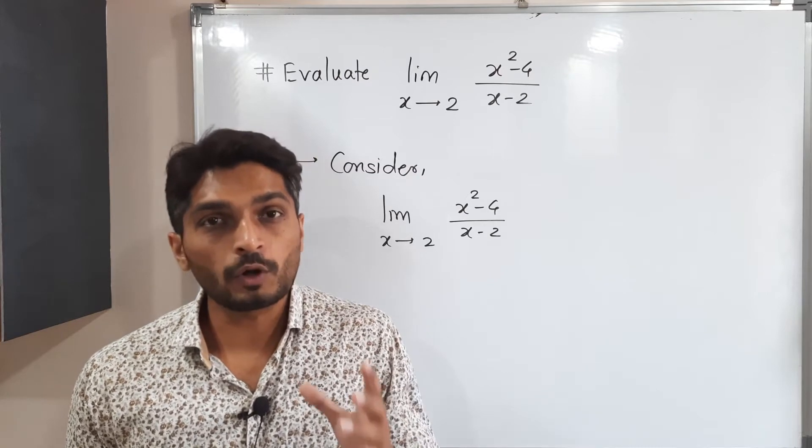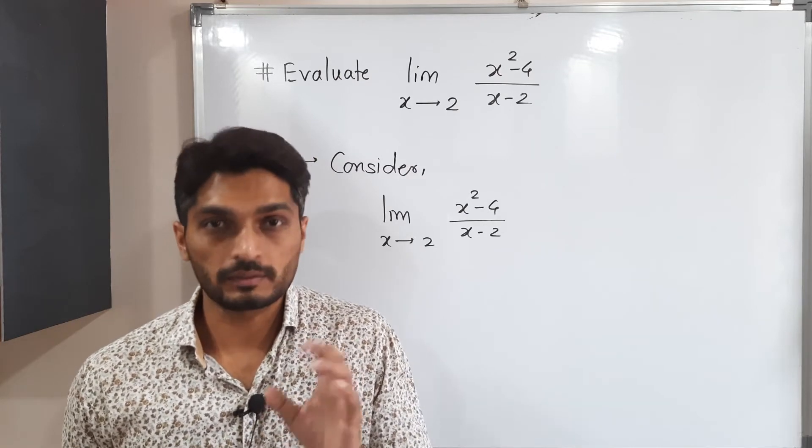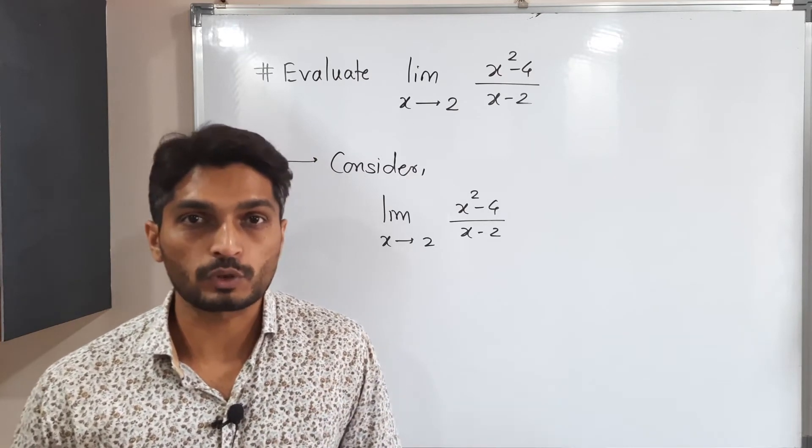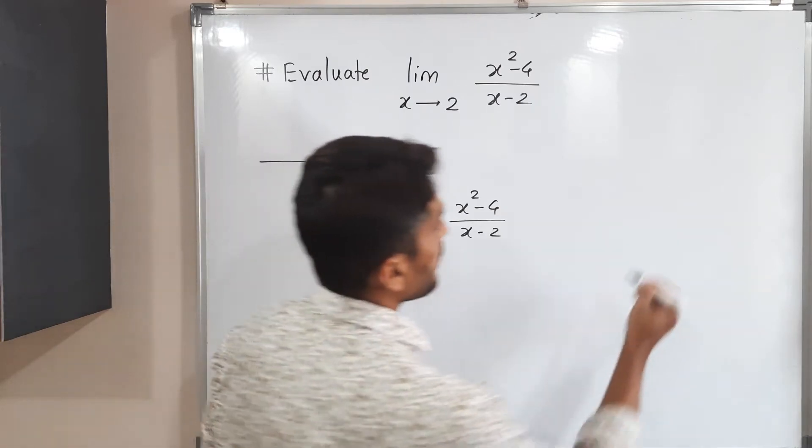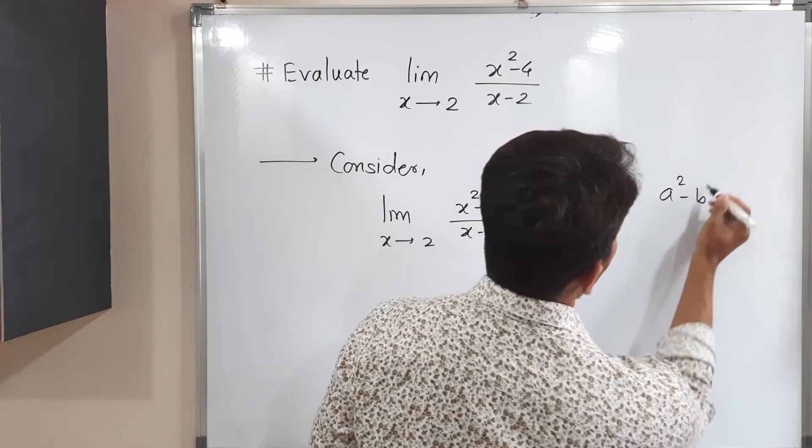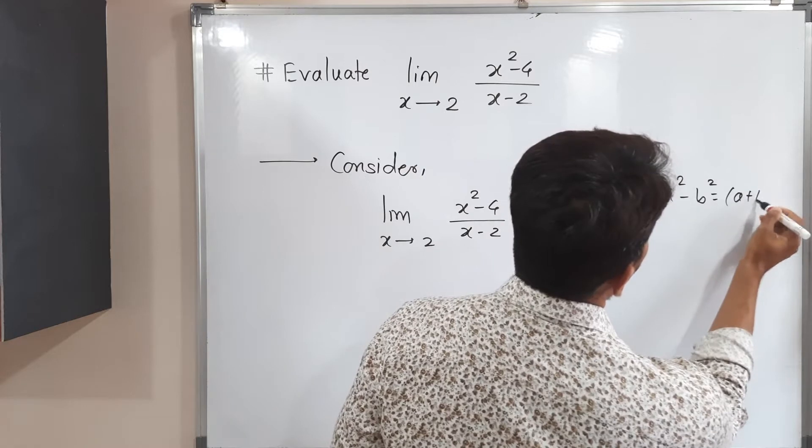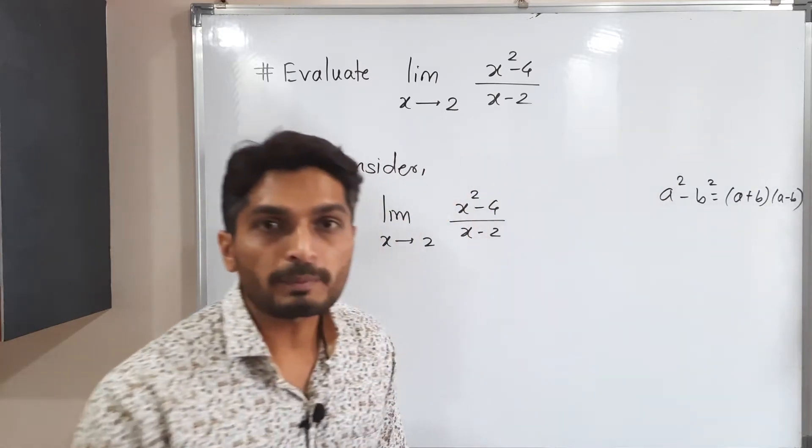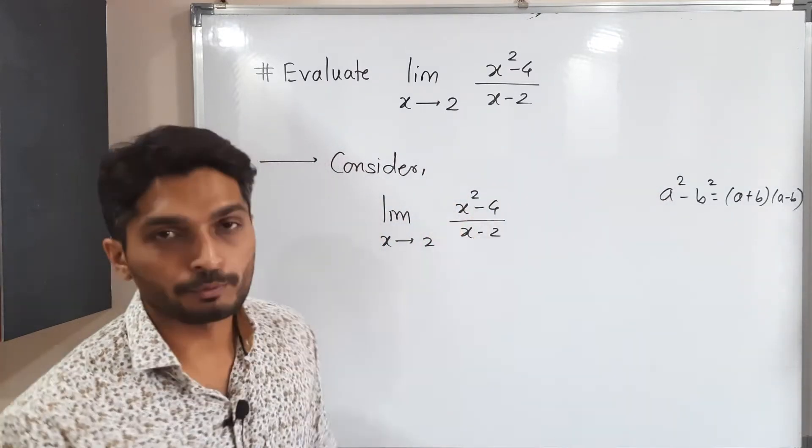We need to simplify and we will always try to cancel if possible few terms. So see, as you know, a square minus b square, this is equal to a plus b, a minus b. Definitely this formula we can use here. Let us use for numerator.